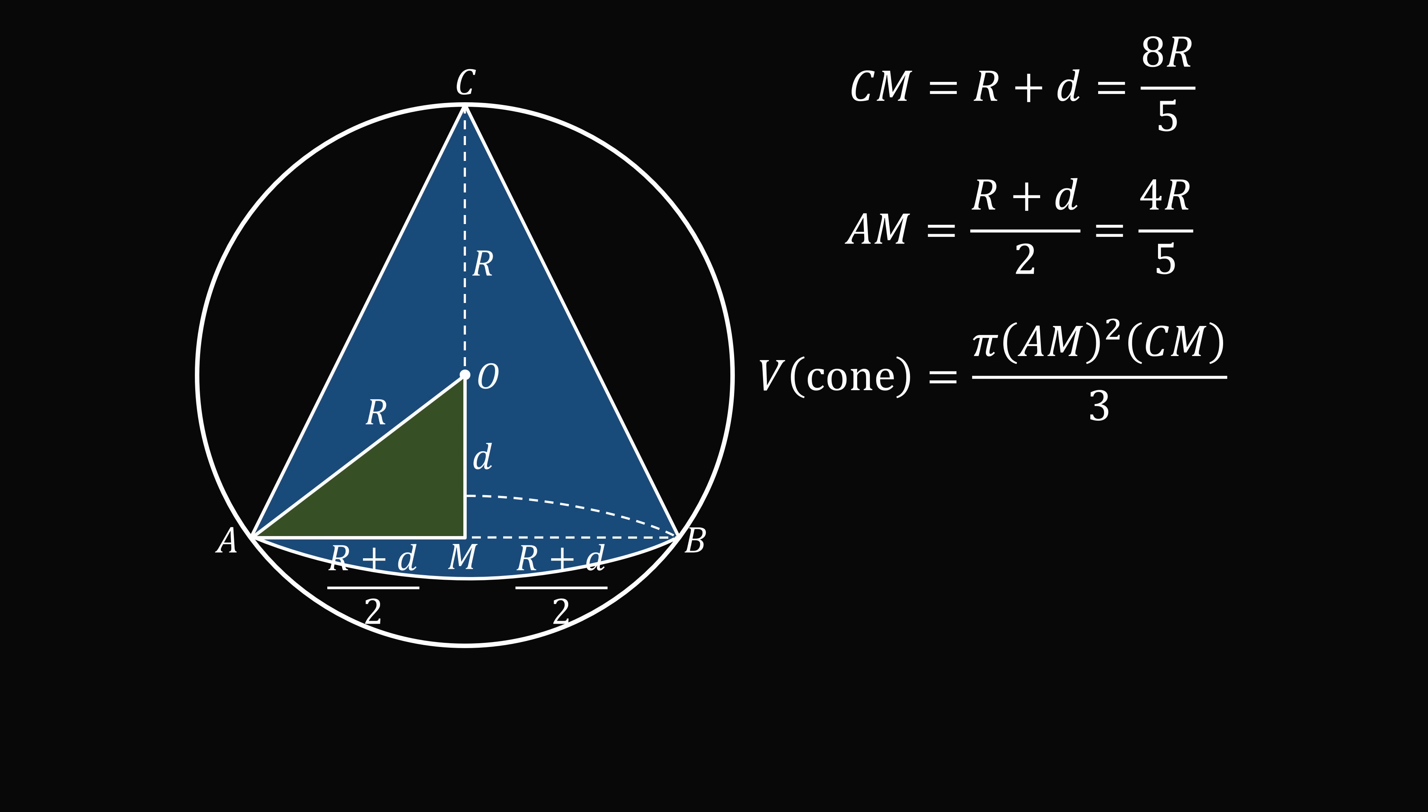So the volume of the cone is equal to pi multiplied by AM squared multiplied by CM all over 3. So we can substitute in, and then we just need to simplify so that we get the volume of the cone is equal to 128 pi R cubed all over 3 times 125.